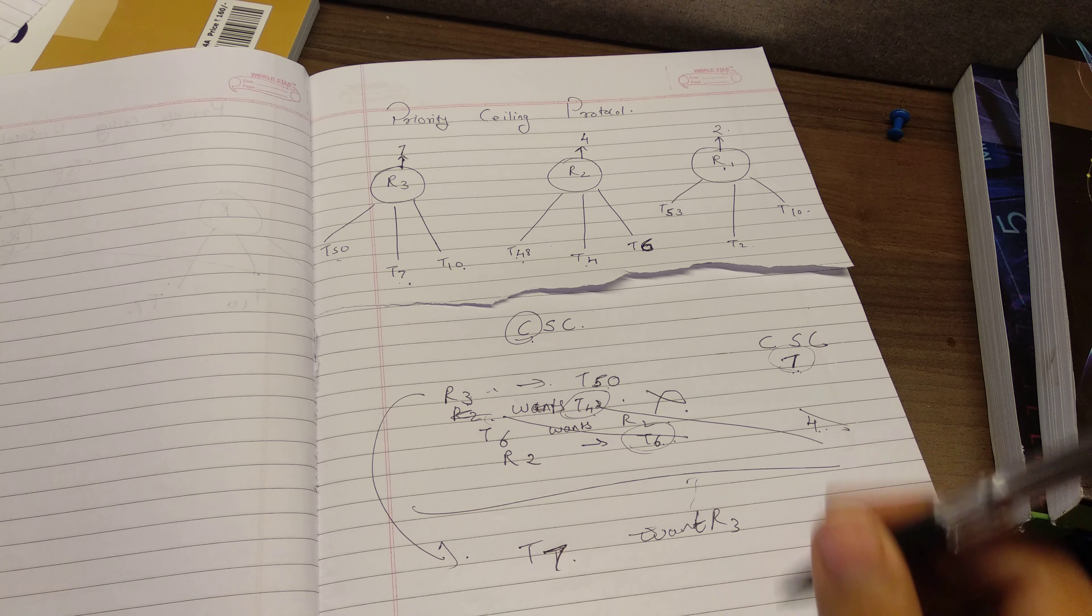So as you can see, the priority is set to the resource right now. So you can quickly infer out that the resources having the most priority, the highest priority will be freed up quicker than the resources that are having lower priority. And that is how priority ceiling protocol works and why it is such an amazing protocol.